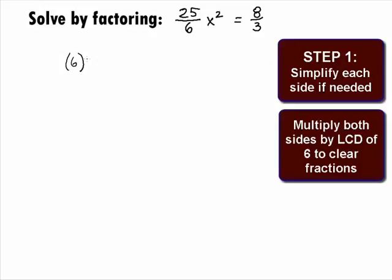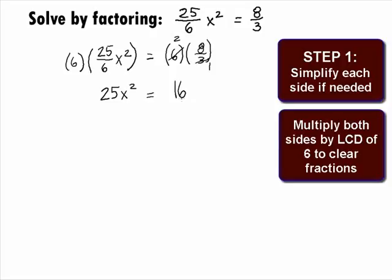Multiplying both sides by 6, we get 6 times 25 over 6 x squared equals 6 times 8 over 3. On the left side, we end up with 25 x squared equals, and on the right side, it will simplify to be 16.